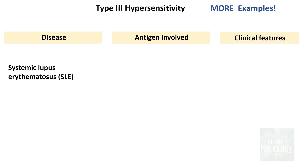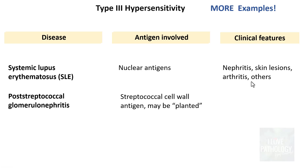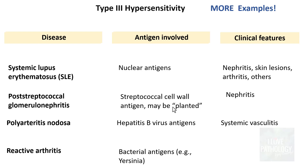Examples of type 3 hypersensitivity include: systemic lupus erythematosus, where the antigen is nuclear antigen and clinical features include nephritis, skin lesions, and arthritis; post-streptococcal glomerulonephritis, where the antigen is streptococcal cell wall antigen planted on the glomerular basement membrane, with predominant nephritis; polyarteritis nodosa, where the antigen is hepatitis B virus antigen resulting in systemic vasculitis; and reactive arthritis, where bacterial antigens such as Yersinia cause acute arthritis following bacterial infection.